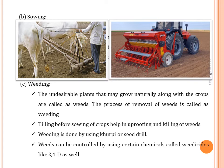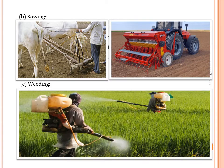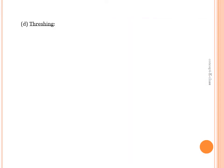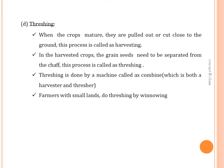Weeding can be done by tilling before sowing — preparing the soil by ploughing kills weeds. A second method is by using a kurpi or seed drill. Weeds can also be controlled by using certain chemicals called weedicides, like 2,4-D, which are sprayed in the fields.